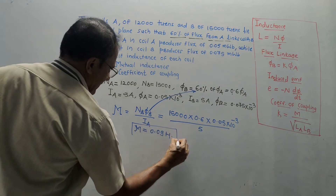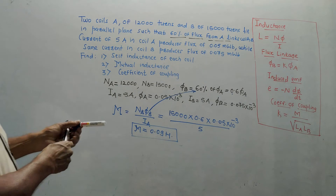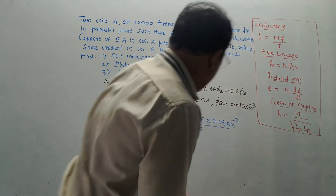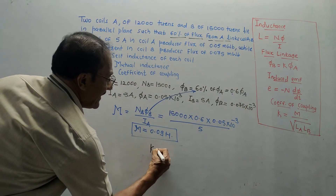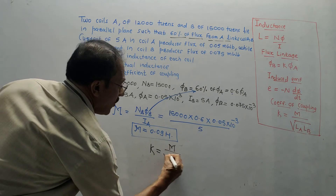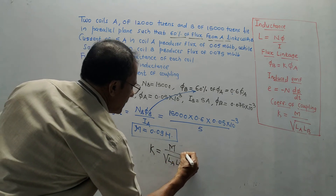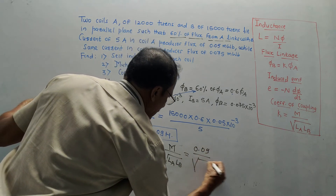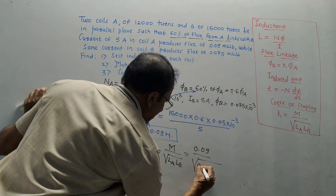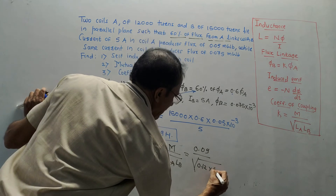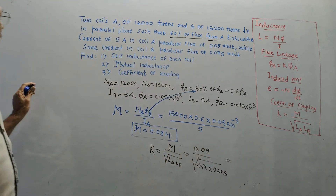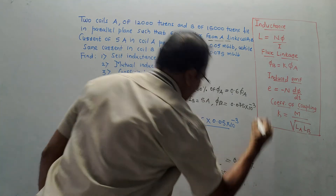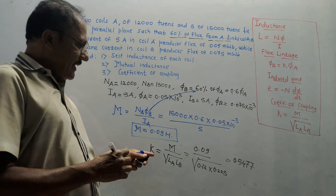Part 3: Coefficient of coupling. Using the formula K = M / √(LA × LB). Substituting: M = 0.09, LA = 0.12, LB = 0.225. So K = 0.09 / √(0.12 × 0.225) = 0.5477. This is the value of the coefficient of coupling K.